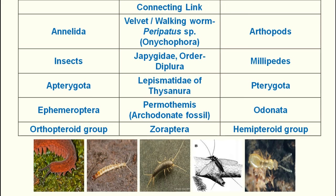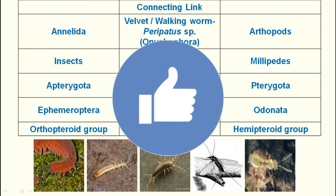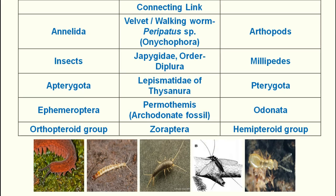The orthopteroid group includes grasshoppers, katydids, praying mantids, and cockroaches — insects with chewing and biting mouthparts. The hemipteroid group includes aphids, scale insects, mealybugs, and bugs — insects with sucking type mouthparts. The connecting link between these two groups is Zoraptera.